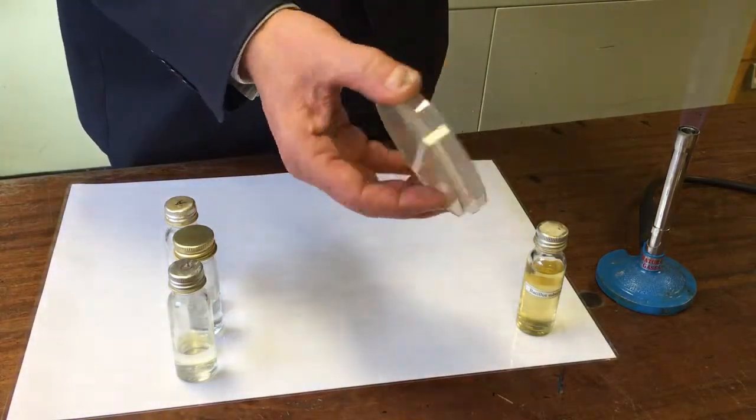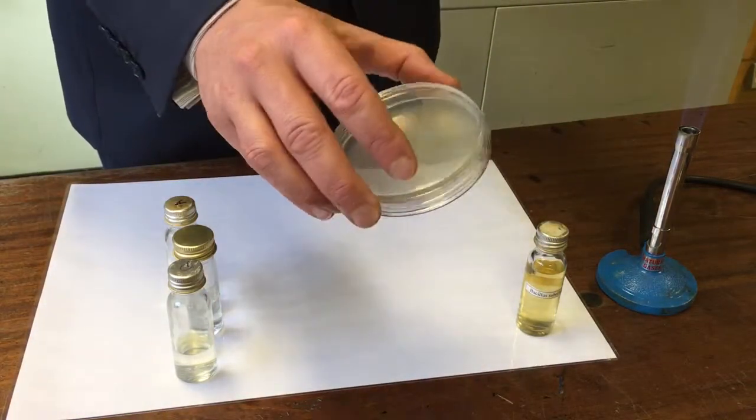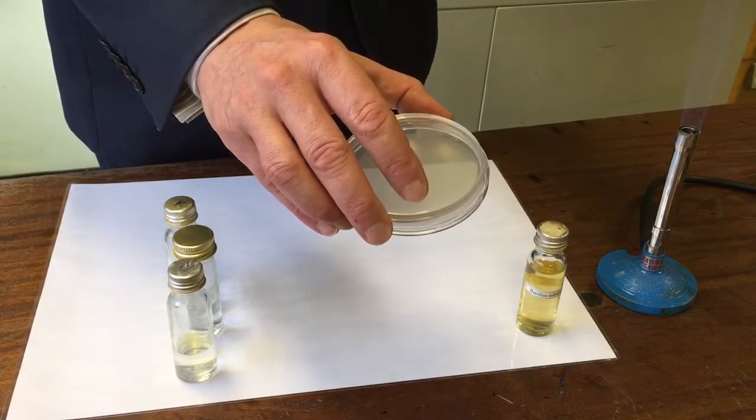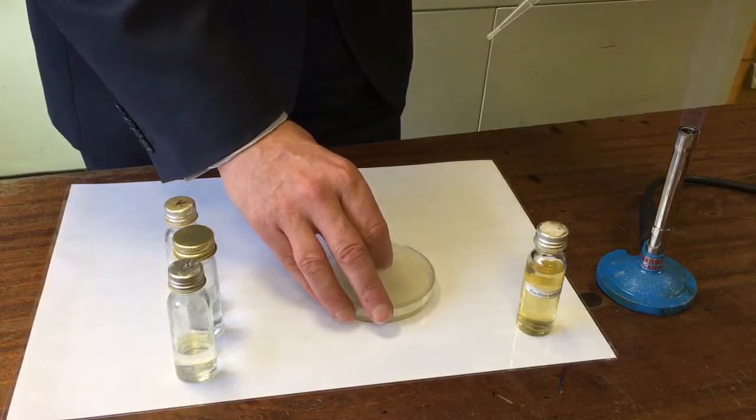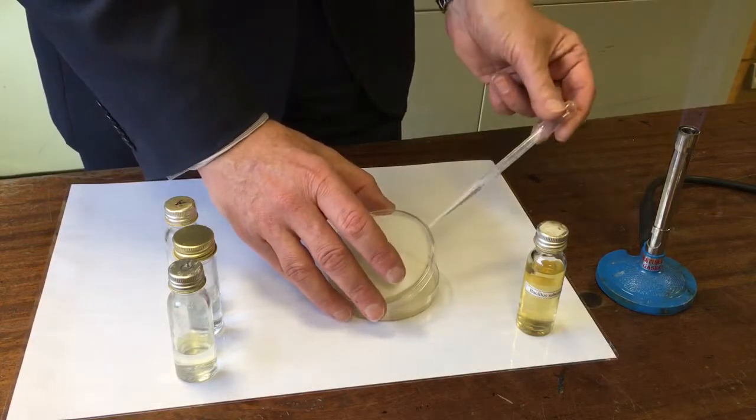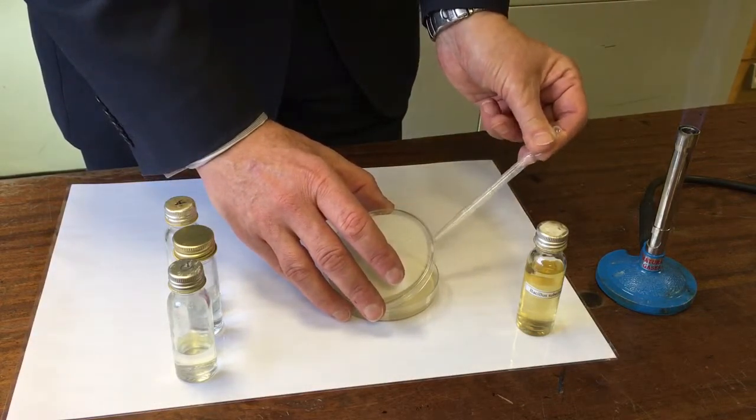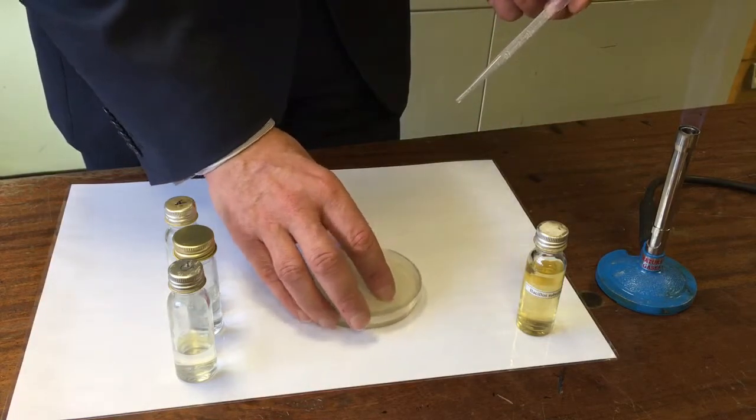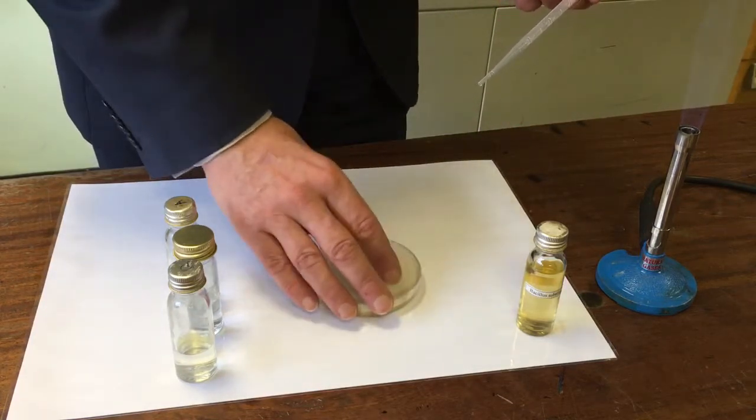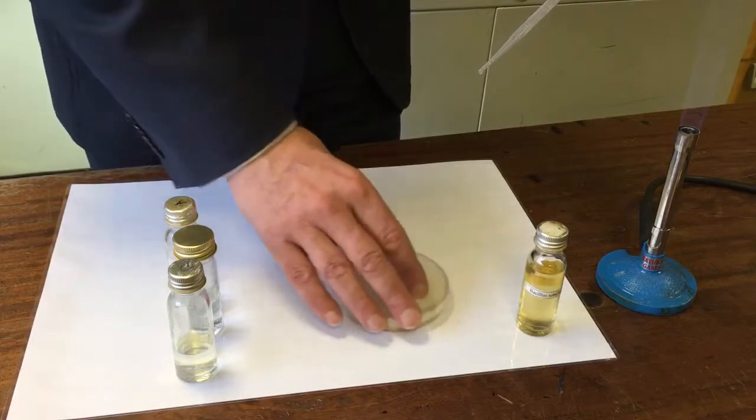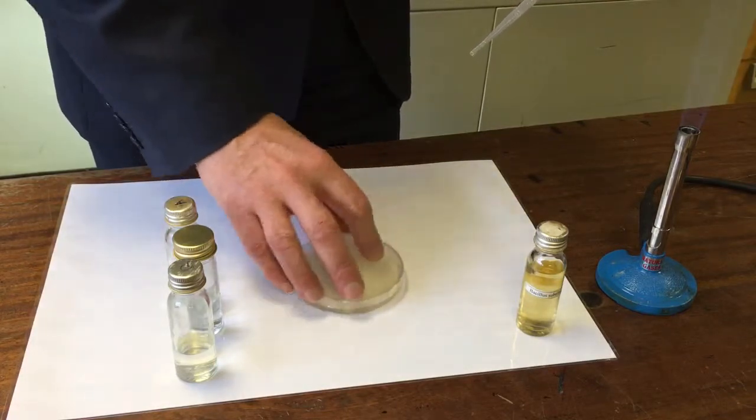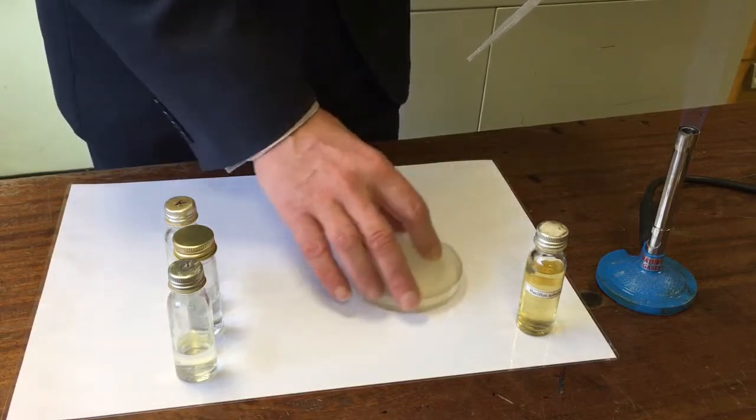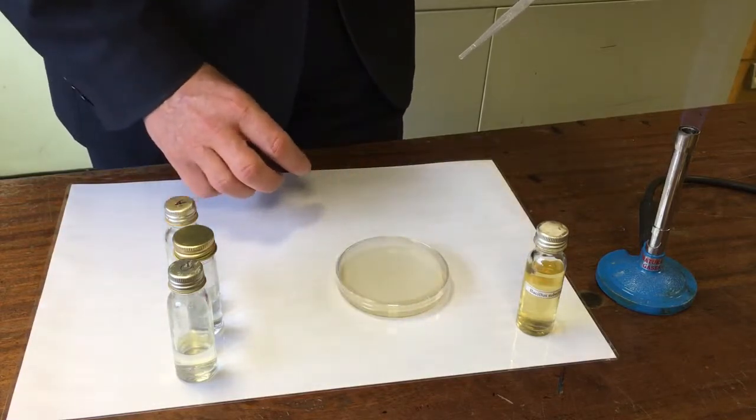So I have an agar plate which is sterile with nutrient broth on. Working as quickly as I can, I'm going to put this culture onto here. I'm not going to lift the lid right off. I'm going to raise it a little. Squirt it onto the surface. Close the lid. And then by a gentle rotating movement, ensuring that I've covered the surface of the agar plate with the culture.